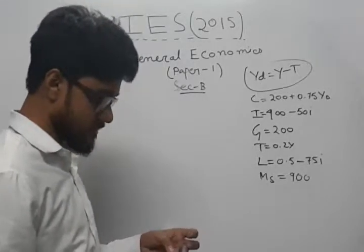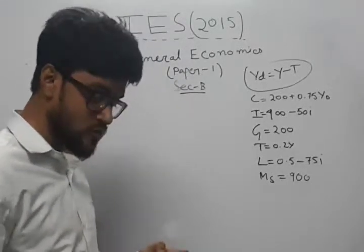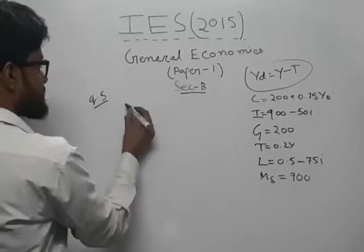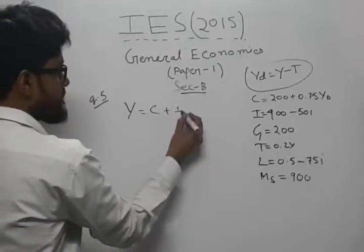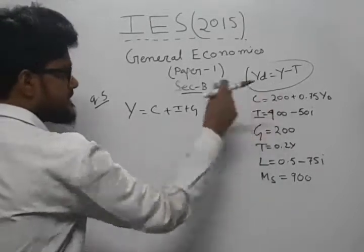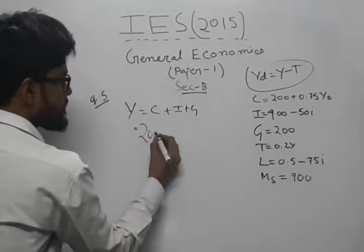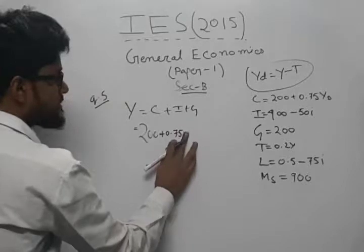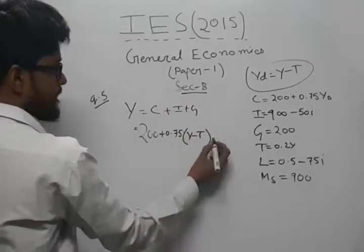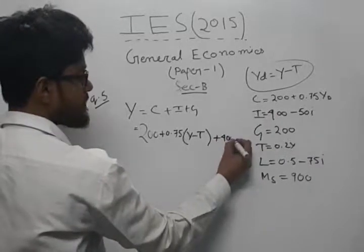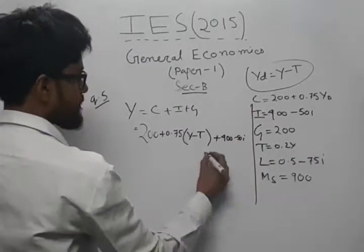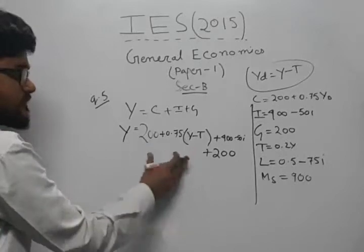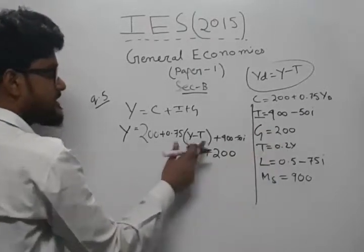Now we will proceed to the questions. The first question asks us to estimate the equation for the IS curve and LM curve. The equation for the IS curve is Y equals C plus I plus G. Here, C is given by 200 plus 0.75 YD. Instead of YD, which is disposable income, we can write Y minus T, plus investment which is 400 minus 50i, plus government expenditure which is 200.